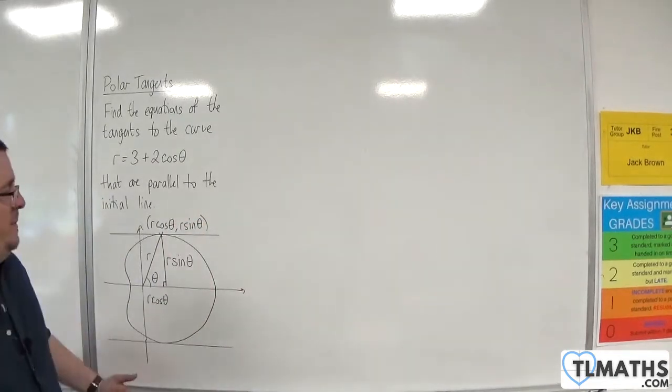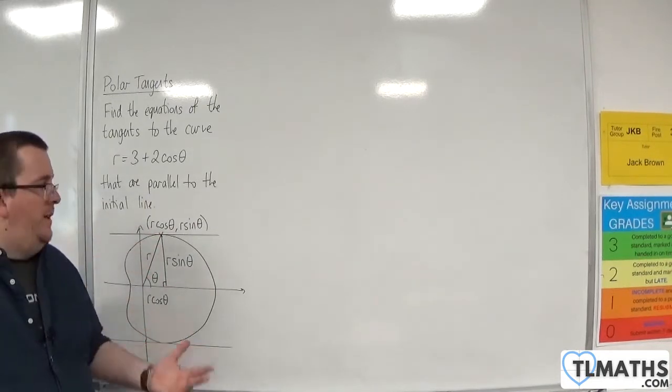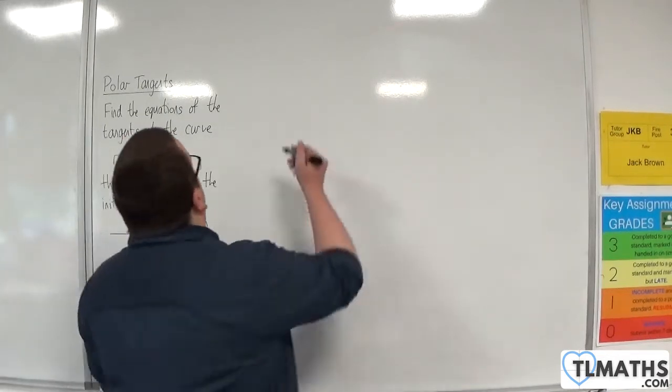Okay, so I'm interested in how far away it is from the initial line, so the y-coordinate, essentially. So, y is equal to r sine theta, that's what I'm interested in working with.